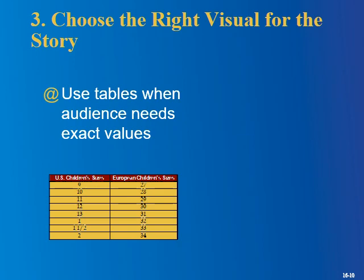Now the nitty gritty: using the right visuals for the story. There are lots of different kinds of visuals, so how do you know when to use which? They start with tables. Use a table when the audience needs to know an exact value. A good example is children's sizes in the U.S. versus Europe — if you're ordering clothes and your kid wears a size 9 U.S., what is that in European sizes? You don't want a ballpark estimate; you want the exact value. Same with temperature conversions between Celsius and Fahrenheit. When you need exact values, use the table.